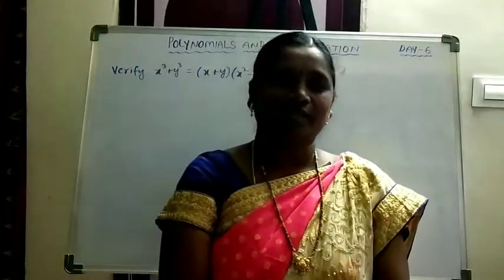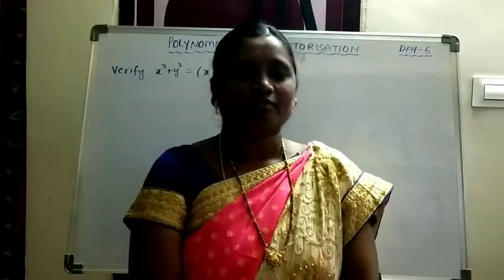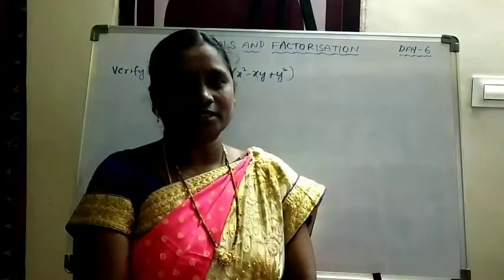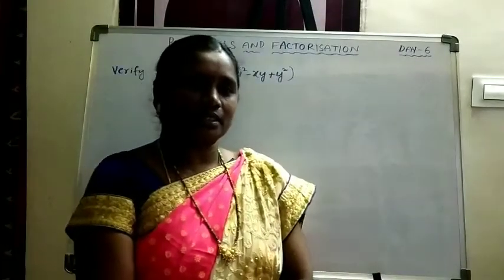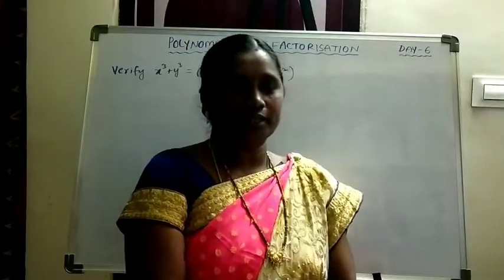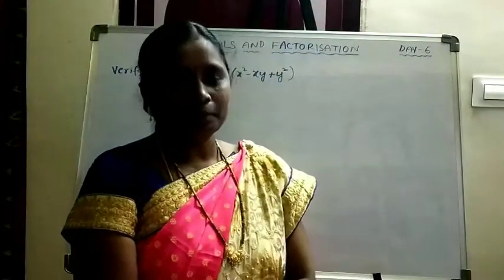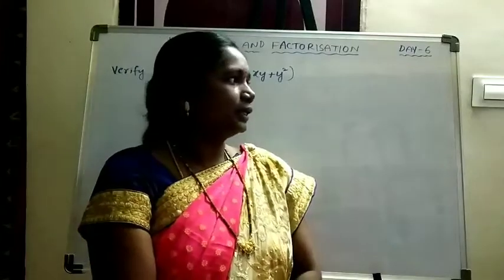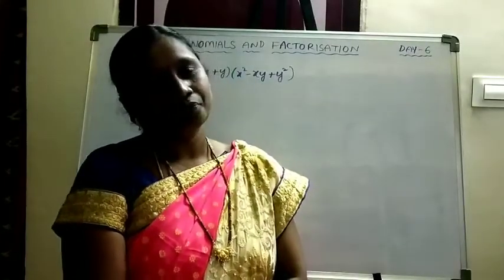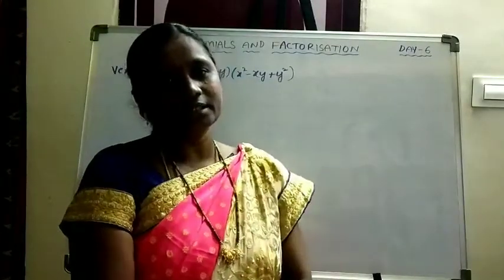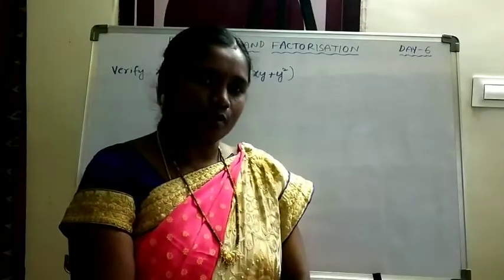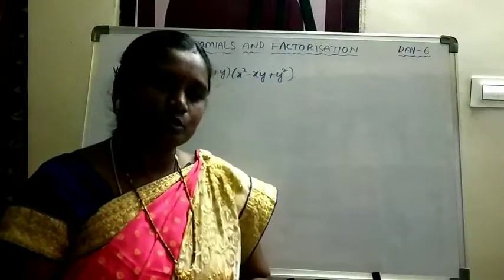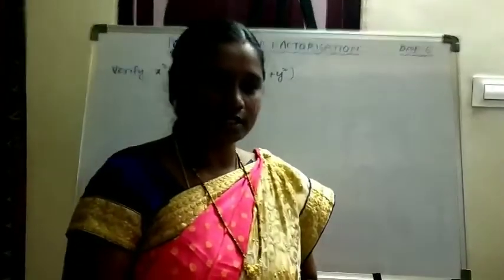Hello children, good evening all of you. Welcome back to the 6th day class of polynomials and factorization. In yesterday's class we learned some more algebraic identities: A plus B plus C whole square, A plus B whole cube, and A minus B whole cube. Based on these three identities, we completed some problems. Today we will see some more identities and problems based on those identities.